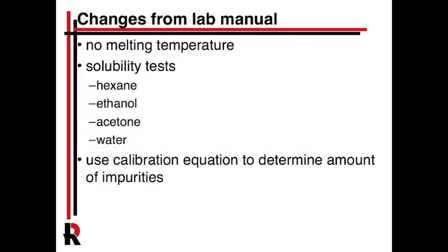The lab manual is pretty thorough, but we're going to make a few changes. One is that we're not doing the melting temperature — we have all the equipment, but it's going to be really kind of painful to get it all moved into the Gen Chem lab. That will be a routine test if you go on to take organic chemistry. We're also going to do a solubility test, but we're only going to use four solvents — hexane, ethyl acetate, acetone, and water.